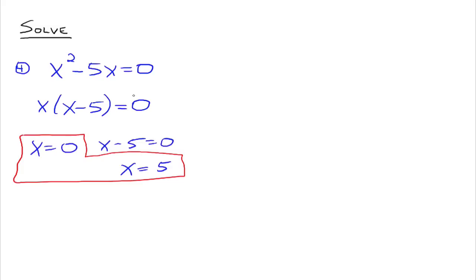We've solved several equations by factoring using the idea that if you have factors whose product is equal to zero, you can set each factor equal to zero to solve the equations. This raises the question: what if a polynomial doesn't factor? For polynomials that do not factor, there are other methods that allow you to solve those equations. But the core concept — product of factors equal to zero means each factor is set equal to zero — is what's important to understand. For equations that don't factor, you'll learn additional techniques later.